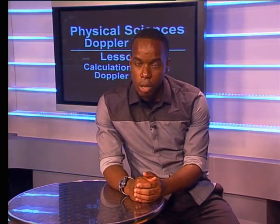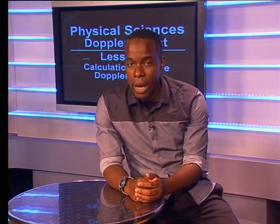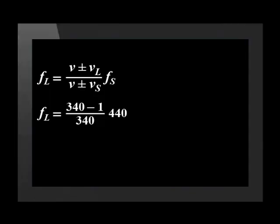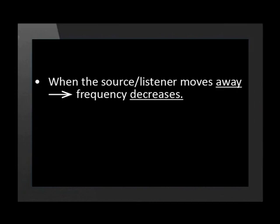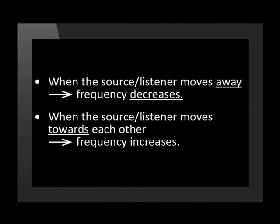Remember, when the source is stationary and the listener moves away, the velocity of the listener is negative. Substituting the negative velocity of the listener, the frequency heard by the listener is 439 Hz, which is less than the source frequency of 440 Hz. It is evident that when the source or the listener moves away, the frequency heard decreases and the pitch of sound heard is lower. When the source or the listener moves towards each other, the frequency heard increases and the pitch of sound heard is higher.